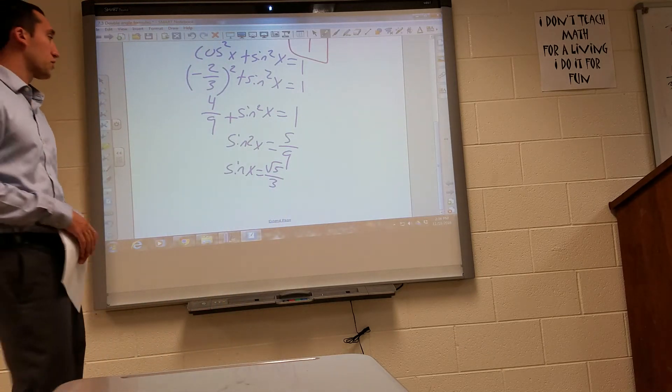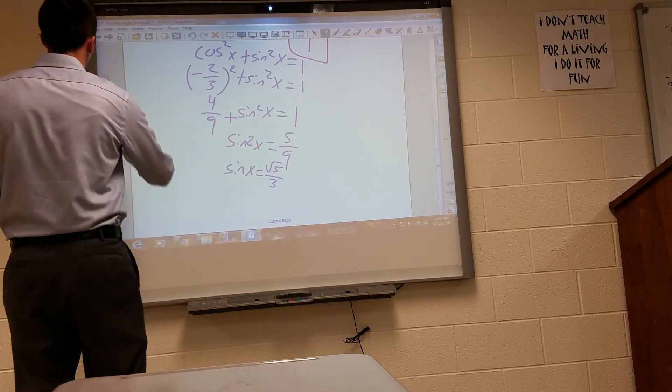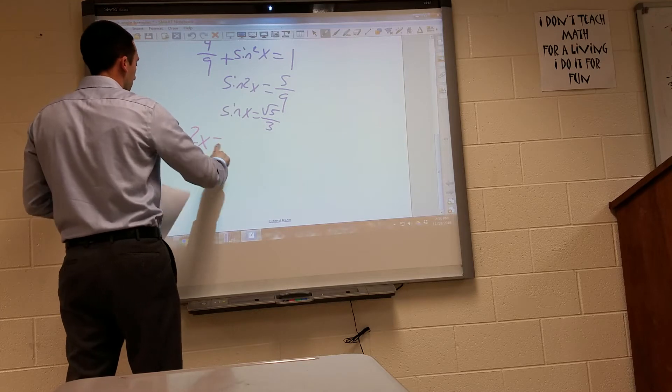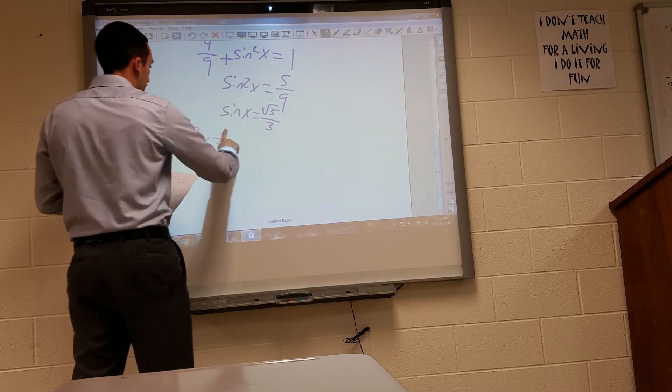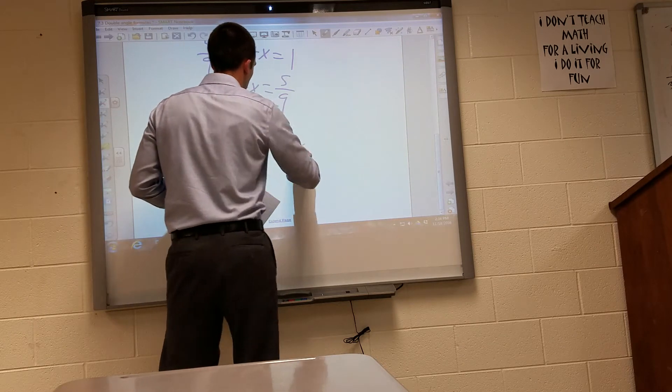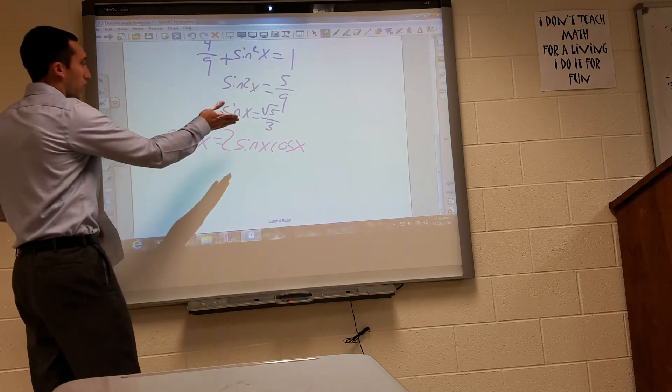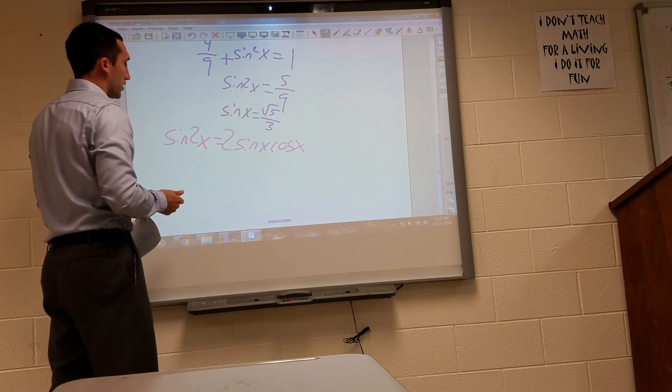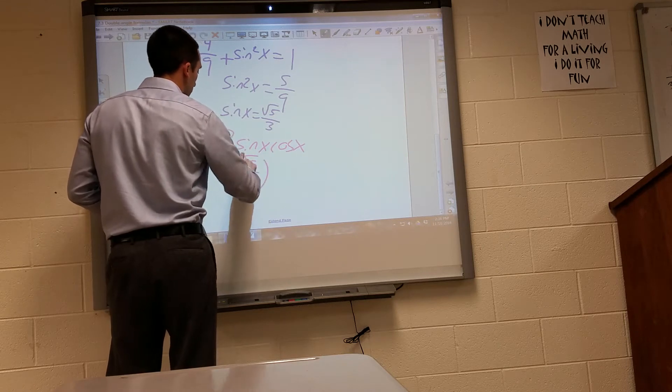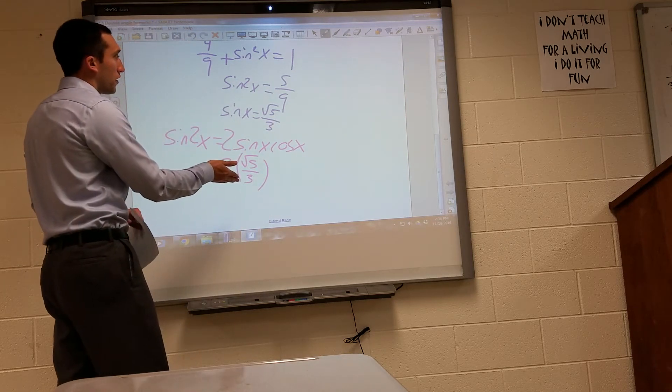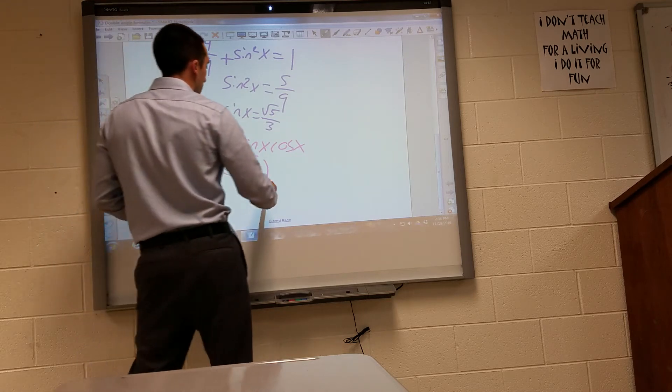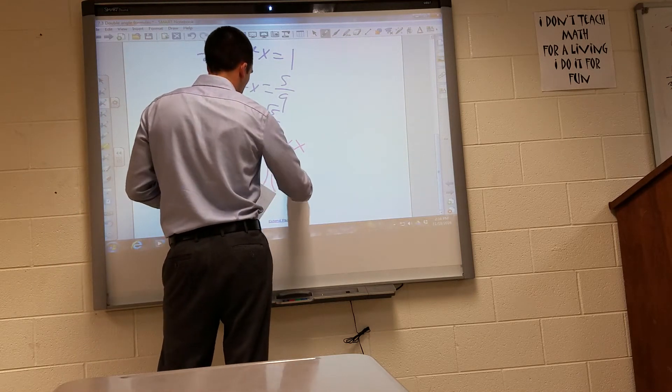So now that we know what sine of x is equal to, we can go ahead and solve for sine of 2x, which is what they wanted in the beginning. So sine of 2x is equal to, that equation is 2 times sine of x, cosine of x. Since I know now what sine of x is, I already knew what cosine of x is, I just plug in. Sine of x is radical 5 over 3. And it's positive, right, because in the second quadrant, my sine value is going to be positive.